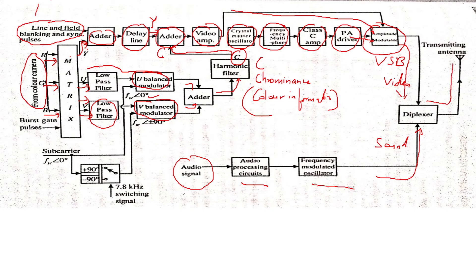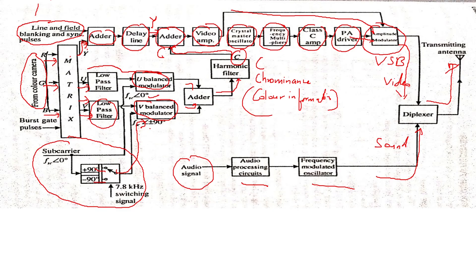The subcarrier system handles the phase shifts of U and V signals — switching between plus 90 degrees and minus 90 degrees for alternate lines. This is how the V signal is phase-shifted in PAL. The brightness signal Y and the color combiner signal C are combined and transmitted through the antenna along with the sound signal. The video signal carries both Y and C information.